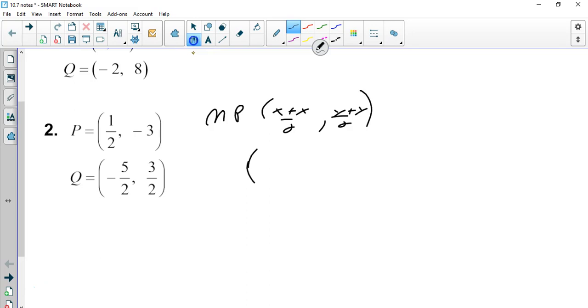So for the first one, 1 half minus 5 halves. Well, 1 minus 5 is negative 4, so that's negative 4 halves, which is simply just negative 2. And actually I believe this is a typo, so go ahead and change this to negative 3 halves. But negative 3 plus 3 is 0 over 2, so just 0, and then average over 2. So this midpoint is going to end up being negative 1 comma 0.